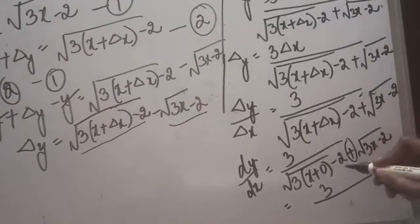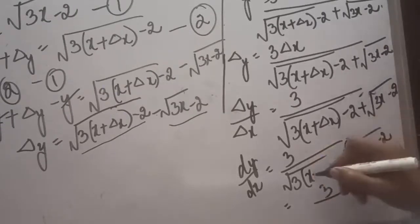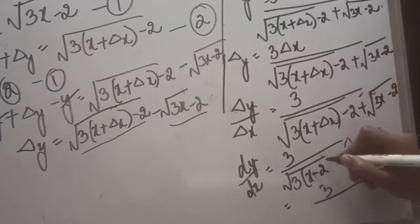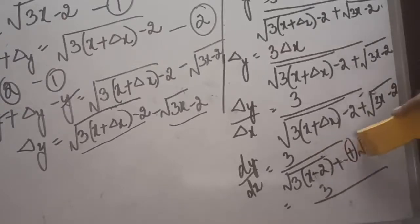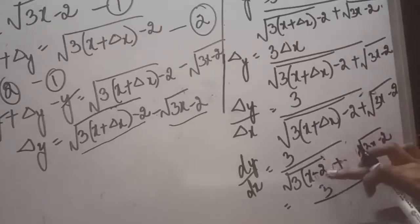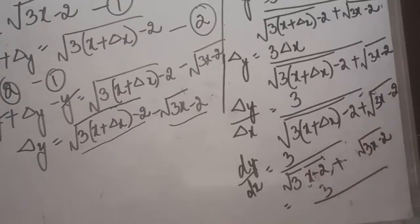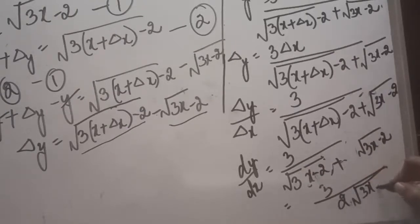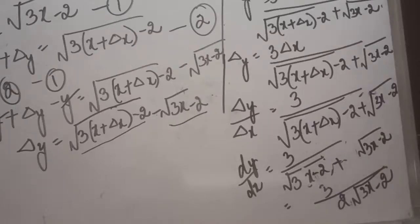On both sides of the denominator we have the same figure root(3x - 2), and since two identical terms are being added we can write it as 2·root(3x - 2). Therefore the final answer is dy/dx = 3 divided by 2·root(3x - 2).